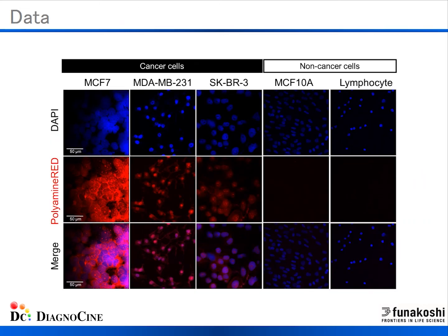Here is experimental data using cell lines — intracellular polyamine imaging in both cancer and non-cancer cells with 30 micromolar of polyamine red and DAPI stain. As you can see in the middle row, red fluorescence indicates polyamine was visually detected in three cancer cell lines by polyamine red stain. On the other hand, incubation with non-cancer cell lines showed little fluorescence. As previously mentioned, polyamines are upregulated in cancer cells, which may serve as a biomarker. DAPI nuclear stain was used as a control to confirm cell presence in non-cancer cell lines, as shown in the merged image.